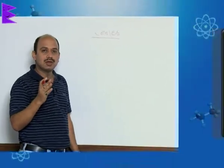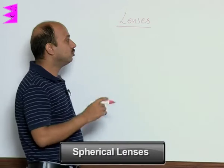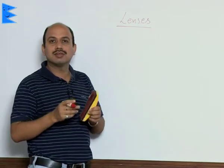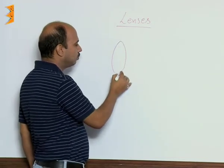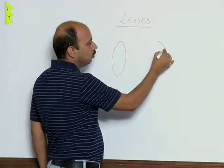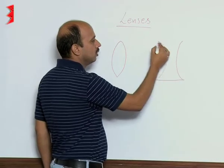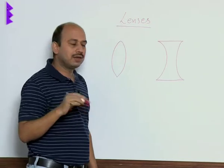Now we have to study how a lens can form an image. Spherical lenses have two spherical surfaces. I take two spherical surfaces and they are bound in this way. A transparent medium is bound by two spherical surfaces.